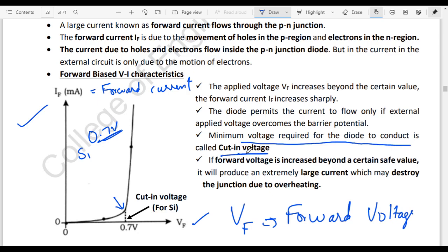If the forward voltage is increased beyond a certain safe value, once it comes to maximum current flow, then the junction overheats and destroys the junction.